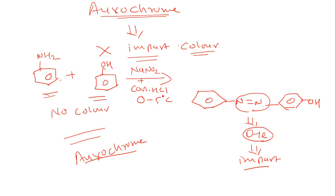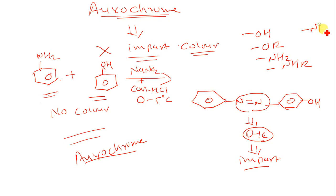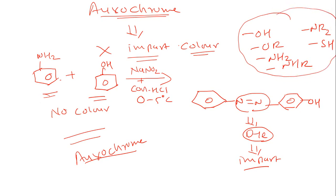Oxochrome can be defined as a group which does not itself act as a chromophore, but whose presence brings about a shift of the absorbance band towards the red end of the spectrum. Special groups that act as oxochromic groups include OH, OR, NH2, NHR, and thiol groups.